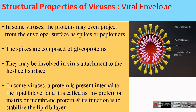In some viruses, proteins may project out from the envelope surface. These proteins are called spikes or peplomers. Chemically, these peplomers or spikes are made up of glycoproteins. These spikes or peplomers are generally involved in the attachment of the virus to its host cell surface — envelope viruses attach to their host cell surfaces with the help of these surface proteins.